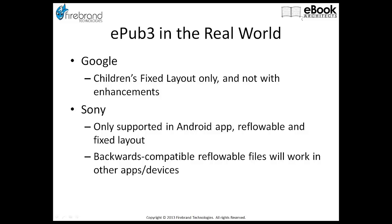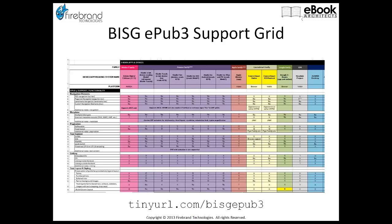If you want to know where support is right now for EPUB 3 across different devices, I recommend you look at the BISG EPUB 3 support grid, downloadable at tinyurl.com/BISG-EPUB3. This is a really good source of information, updated every six months or so. There's also work on making this support grid more regularly updated. I highly recommend you take a look at it — it's a pretty good resource for making sure you're building EPUB 3 files that work on the devices you're targeting.